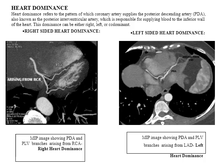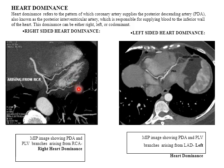Heart dominance refers to the pattern of which coronary artery supplies the posterior descending artery — also known as the posterior interventricular artery — which is responsible for supplying blood to the inferior wall of the heart. Dominance can be right, left, or co-dominant. In right heart dominance, the posterior descending artery and posterior left ventricular artery arise from the right coronary artery.